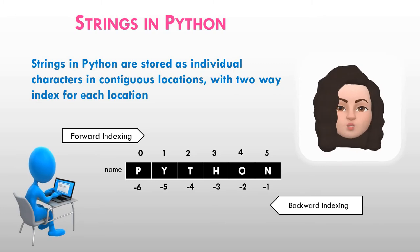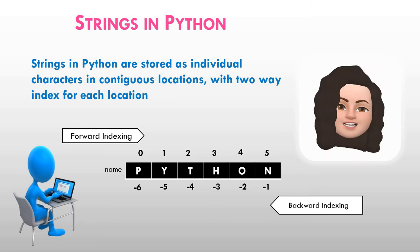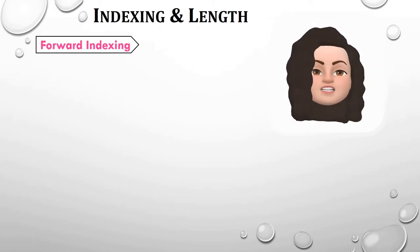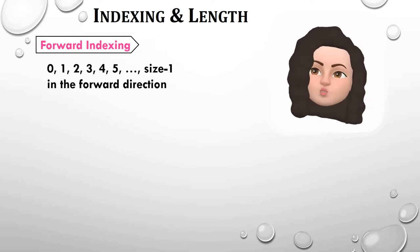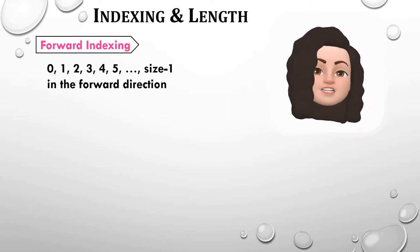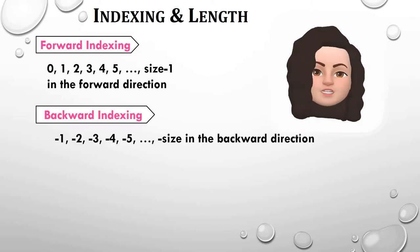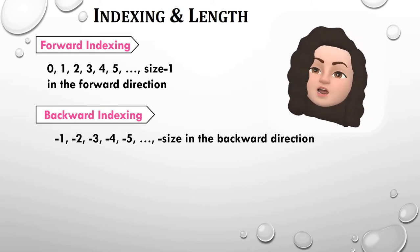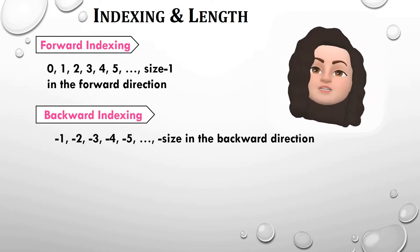Strings in Python are stored as individual characters in a continuous memory location. Forward indexing begins with 0, 1, 2 and so on till size minus 1 in the forward direction. Backward indexing starts from minus 1, minus 2, minus 3 and so on till minus size in the backward direction.